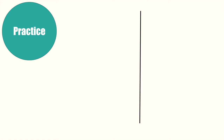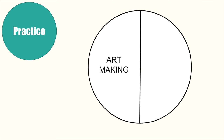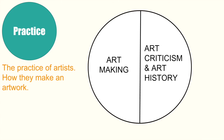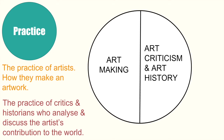Practice can be further broken down into two other areas: the idea of art making as a form of practice, and art criticism and art history as the other form of practice. We need to study both aspects, but for today we're just looking at the art making aspect. Art making is essentially the practice of artists — how they make an artwork — while the practice of a critic and historian is to analyse and discuss the artist's contribution to the art world and the world at large.